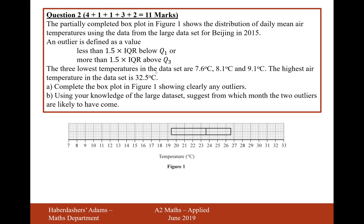The three lowest temperatures in the data set are 7.6, 8.1, and 9.1. The highest air temperature in the data set is 32.5. Complete the box plot in figure 1 showing clearly any outliers.